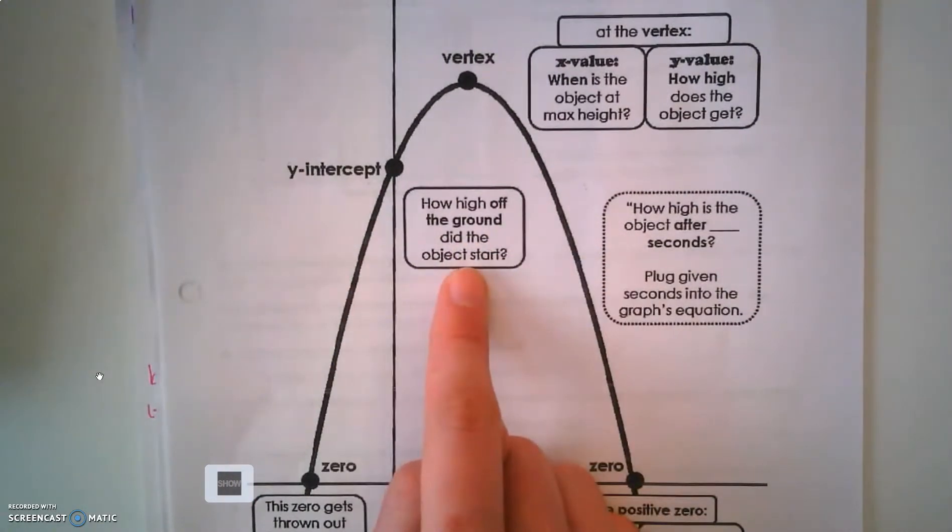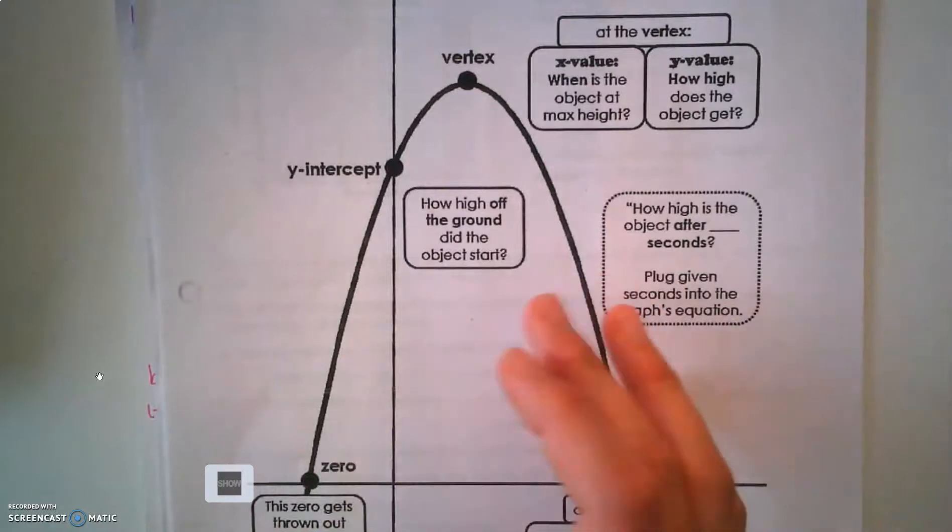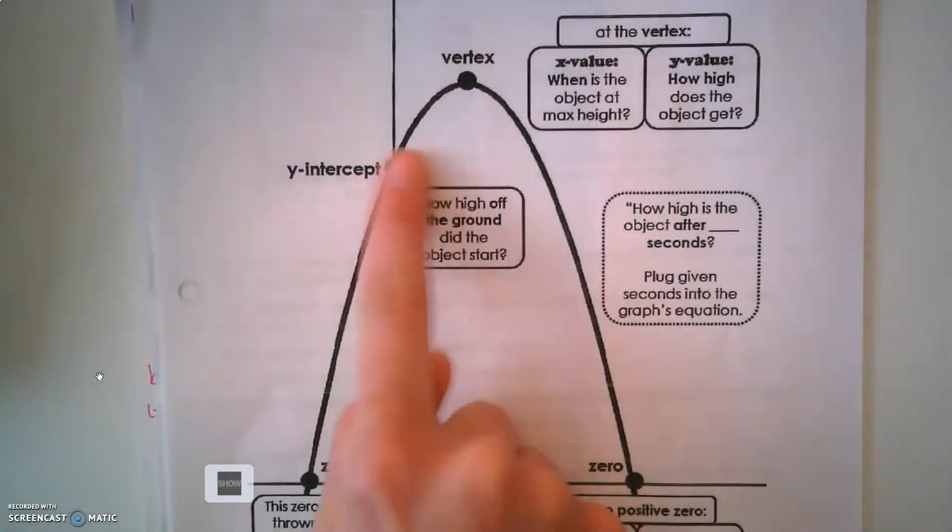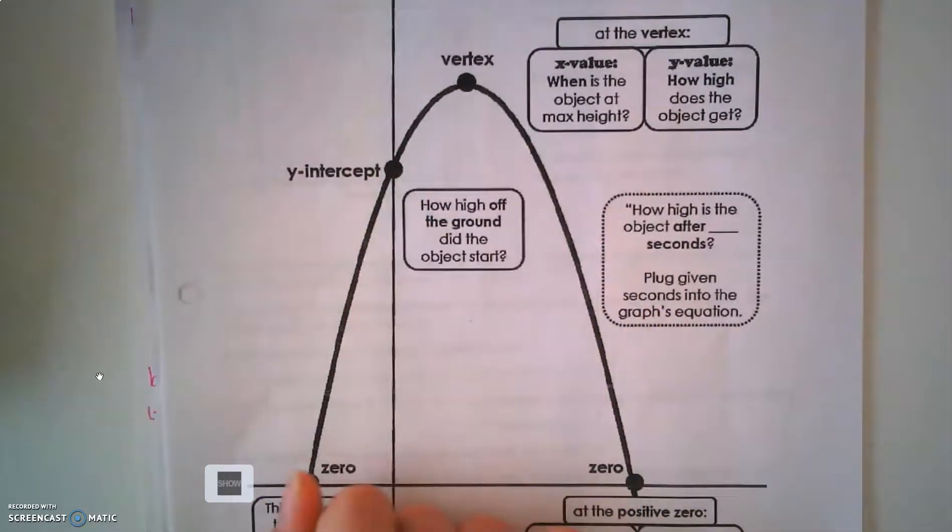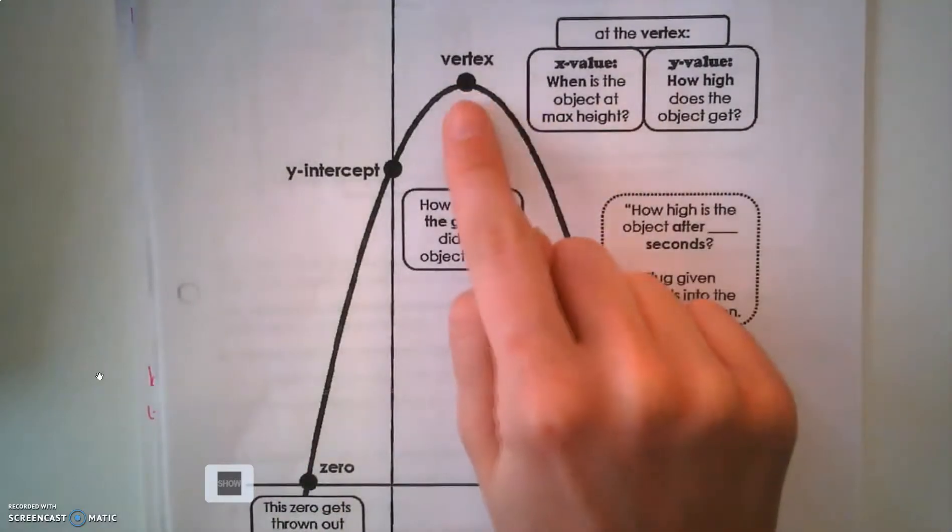When I want you to solve for a y-intercept, I will typically ask how high off the ground the object starts. What's the launching point? That's asking for a y-intercept, an initial height.